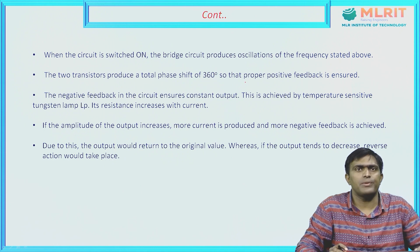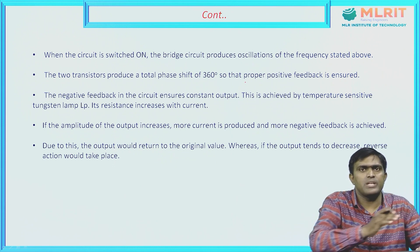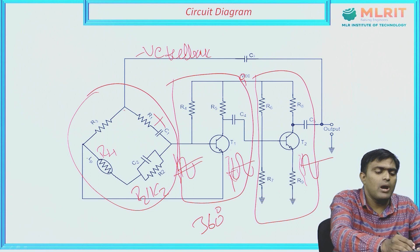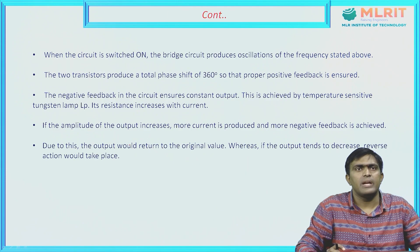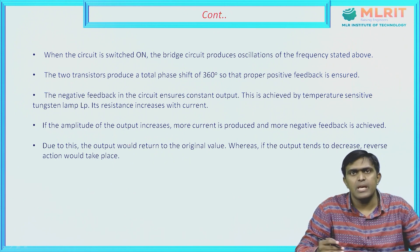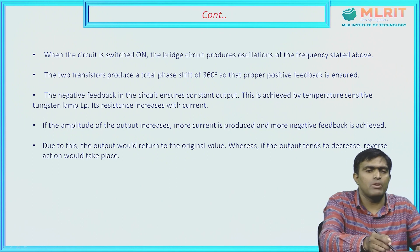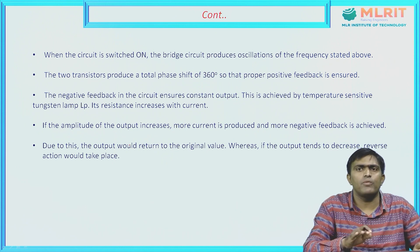The negative feedback in the circuit ensures constant output. The negative feedback is given from the output of transistor T2 to the input of the bridge network, and this is achieved by using a temperature-sensitive tungsten lamp LP — the R4 resistor is replaced by a lamp LP to achieve negative feedback in the circuit. When the amplitude of the output increases, more current is produced and more negative feedback is achieved, causing the output to return to its original value. If the output tends to decrease, the reverse action takes place, keeping the output voltage constant.